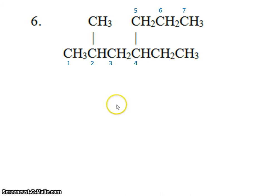So the name of this compound should be 4-ethyl, 2-methyl, heptane. Heptane, because there's 7 carbons in the parent chain. 4-ethyl, because there's an ethyl group attached to the fourth carbon. And 2-methyl, because there's a methyl group attached to the second carbon.